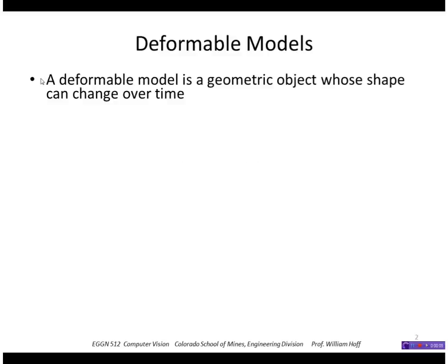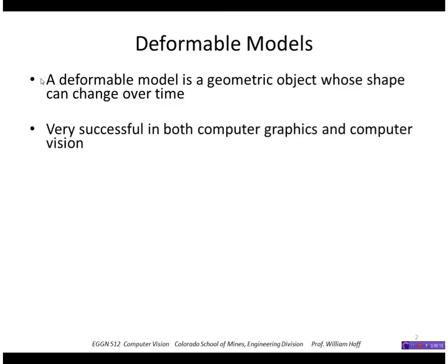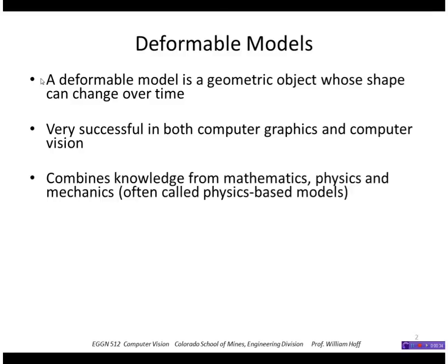Deformable models. A deformable model is a geometric object whose shape can change over time. An example would be a human body or something that's articulated and isn't rigid. The study of deformable models and the methods to represent them have been very successful and widely used in both computer graphics and computer vision. It combines knowledge from mathematics, physics, and mechanics, so they're often called physics-based models.